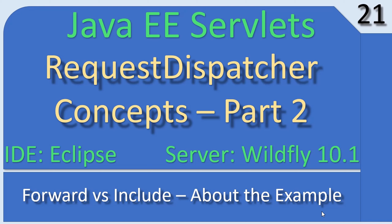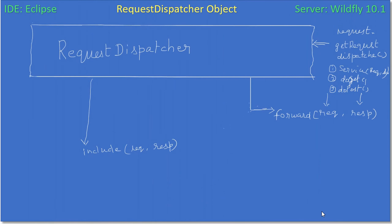Hello friends, welcome to the Java EE Servlet tutorial. We are going to look at the example we are going to create. First, let us quickly review what we discussed in Part 1, then we will move to Part 2 of this concept video. We discussed the RequestDispatcher and how we can get it using the getRequestDispatcher method of the request object, then make a call to forward or include.